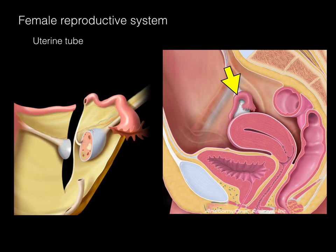In this cross-section through the uterine tube and ovary, there is an ovum that is ovulated into the peritoneal cavity. Then those fimbriae — those finger-like projections — take the ovum and bring it inside the lumen of the fallopian tube and transport it down into the uterine tube.